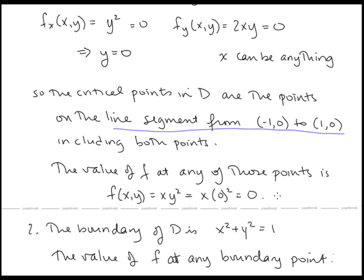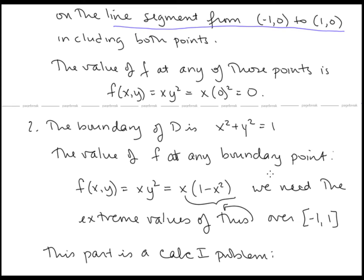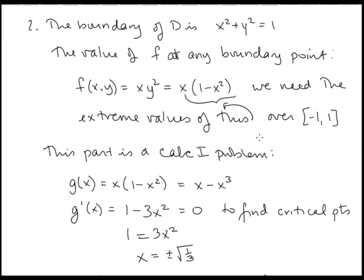Now we want to check the boundary, which is the circle x² + y² = 1. We want to express f in terms of just one variable using the boundary equation. Solving for y² gives y² = 1 − x², and substituting into f = xy² gives f = x(1 − x²) along the boundary. So we define g(x) = x(1 − x²) = x − x³, and we look for the absolute extrema of this function for x from −1 to 1. This is now a Calc 1 absolute extrema problem.